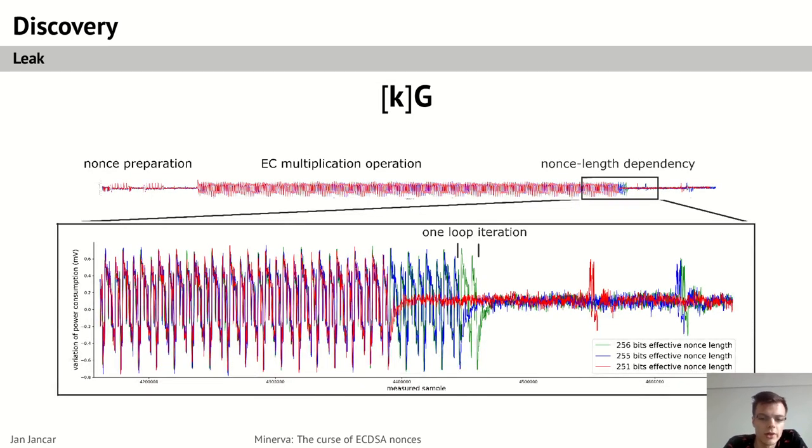This is an overlay of several aligned power traces. Obviously, they say signatures on the Athena smart card, with different bit lengths of the nonce. As you can see, the leakage happens in the scalar multiplication loop, which loops exactly bit length amount of times, which creates the timing difference and is also clearly discernible on the power traces.